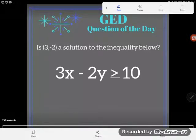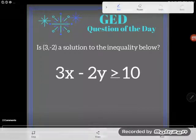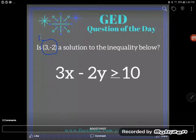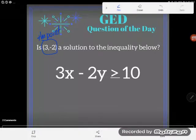Hey GED students, it's GED question of the day and looks like we're in the land of algebra still. So let's go ahead and read our directions. It says 'is' and this thing right here I recognize as a point. I know that if I have two numbers in parentheses with a comma between them, I'm looking at a point.